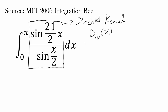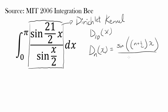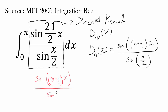A Dirichlet kernel is a collection of functions of the form: D sub n of x equals sine of (n + 1/2)x divided by sine of x/2. In our case, we have sine of 21/2, which is the same as (10 + 1/2), because 10 is 20/2. So we have (10 + 1/2)x divided by sine of x/2. Our n is 10, so we have D sub 10 of x.